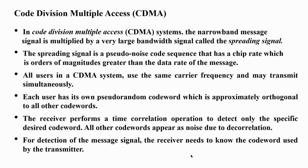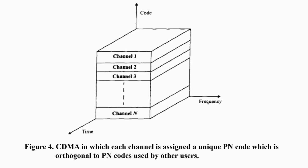All CDMA systems use the same carrier frequency and the same time slots. Each user has their own pseudo-random code, and all codes are approximately orthogonal to one another. The receiver performs a correlation operation to detect only the specific desired signal. The code must be known to the particular receiver in order to demodulate that signal.